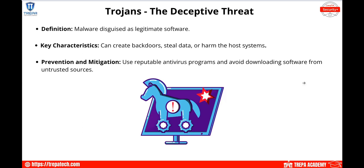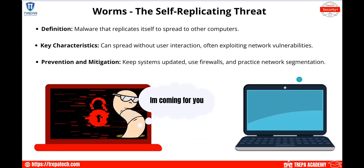Trojans are malware disguised as legitimate software. Key characteristics: they're mainly there to create backdoors, steal data, and harm host systems. They can come in through phishing emails or as part of other malware — almost like an add-on. To prevent this, make sure you have antivirus and anti-malware suites doing signature-based and heuristic-based threat detection, and avoid downloading software from untrusted sources. For example, a pop-up saying 'download this to speed up your system' that you click and install — that's a trojan.